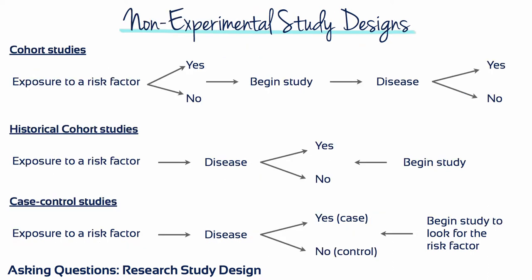In a cohort study, exposure to the risk factor is established, and the researcher follows people over time to record who gets the disease of interest. This is a prospective study.